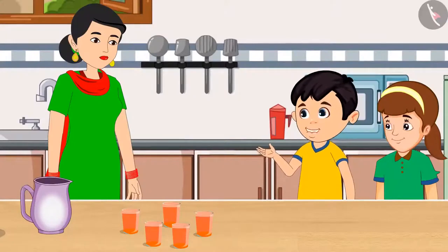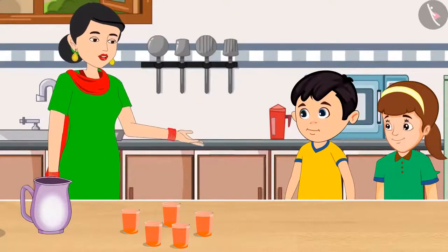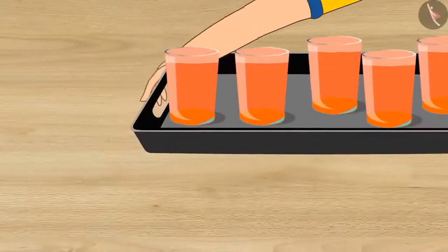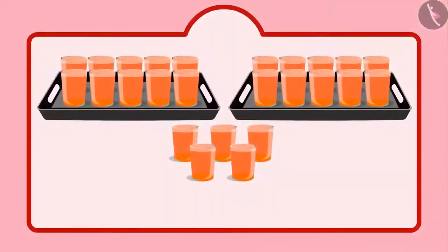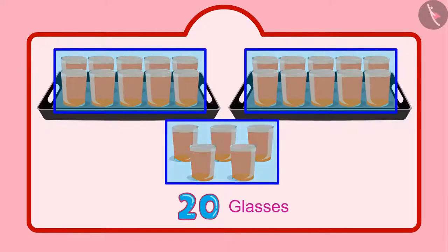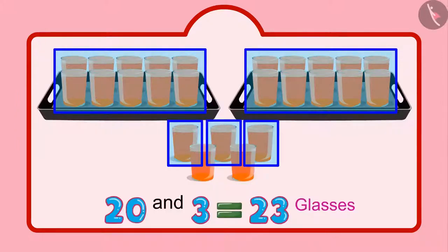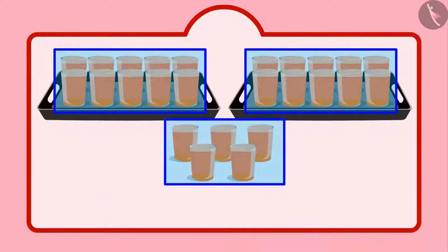Mummy, give us some more glasses of sherbet. Okay Chotu, here you go. I have made some more sherbet. Keep it in this plate and take it outside. Children, can you tell me how many glasses of sherbet were distributed by Chotu and Aarti together? First of all, Chotu distributed 2 groups of 10 glasses, i.e. 20 glasses of sherbet, and then 5 more glasses — that makes it 21, 22, 23, 24, 25. Chotu distributed 25 glasses of sherbet.